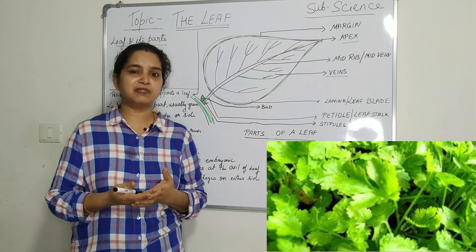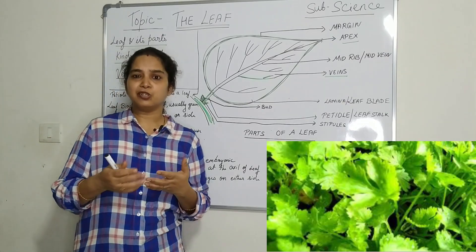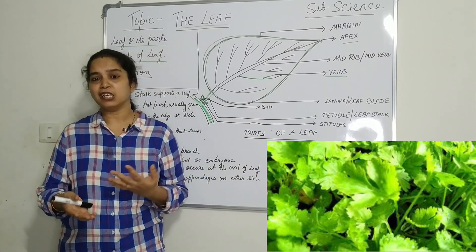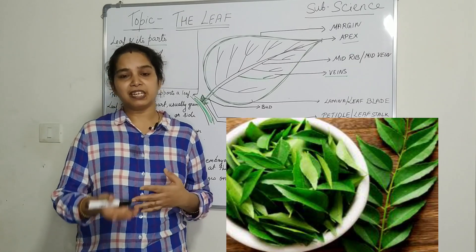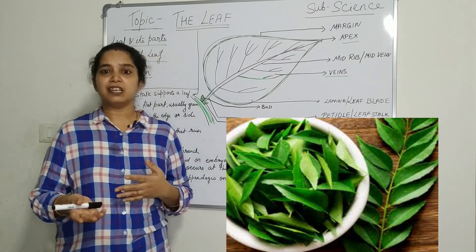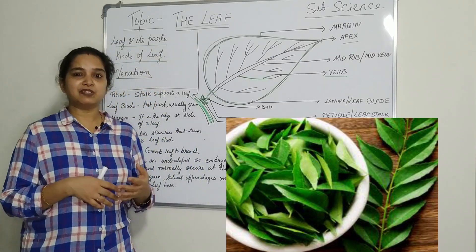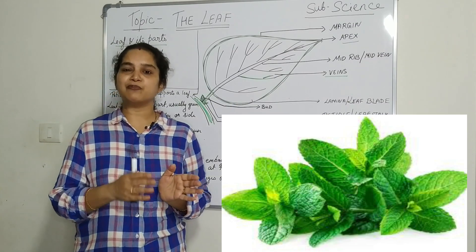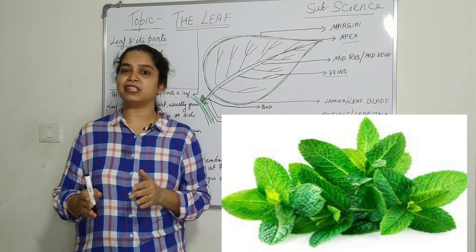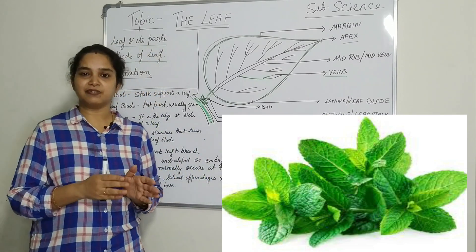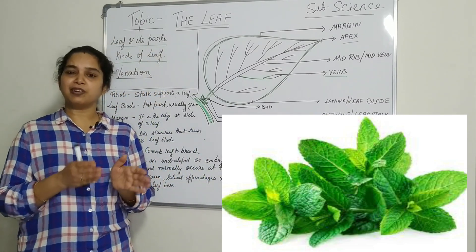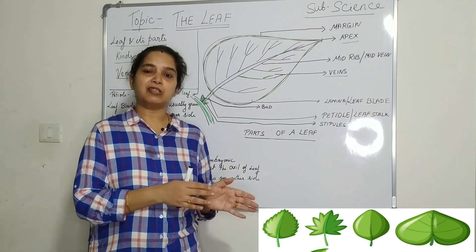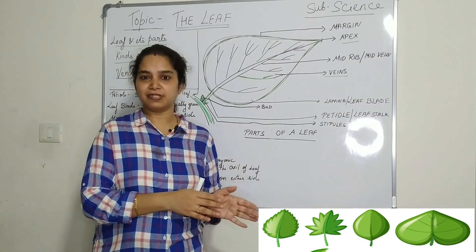What are the different types of leaves you eat? You eat palak, you eat methi, coriander, curry leaves, mint leaves — all these leaves you eat. You might have observed that the shape of the leaves is different across different leaves. For example, coriander leaf is different from palak leaves.